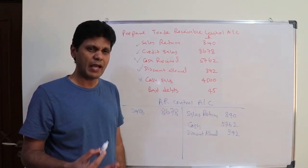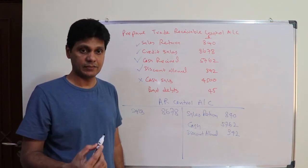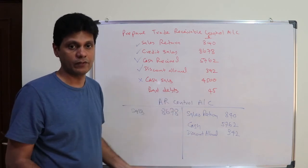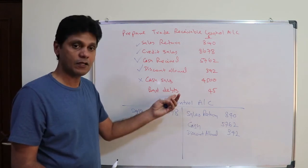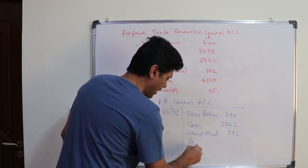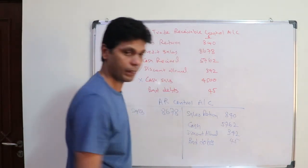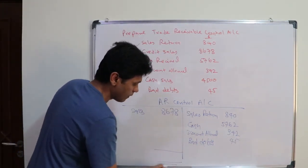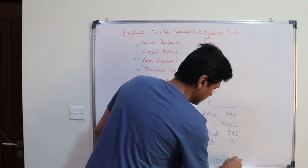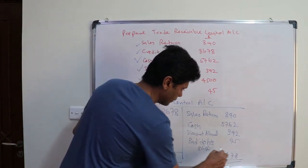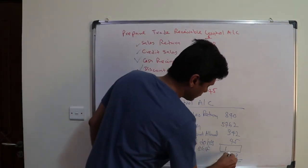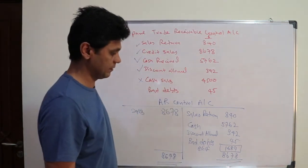Bad debts of $45 represent irrecoverable debts — a loss and an expense. You debit the bad debts account and credit the accounts receivable control account because you will not recover this amount. So bad debts $45 is on the credit side. The debit side totals $8,678, giving a balance carried forward of $1,689.